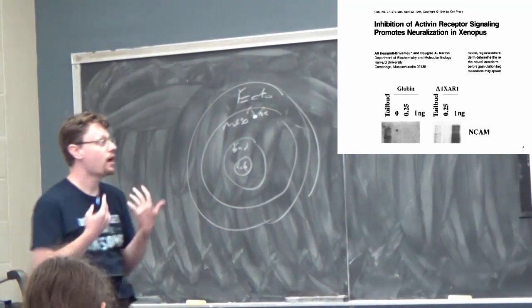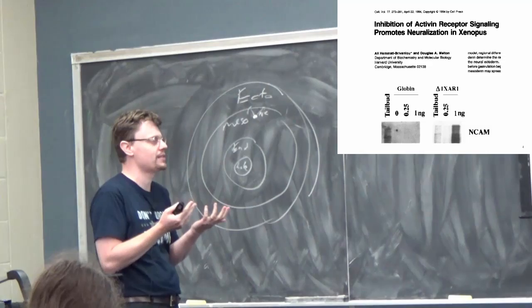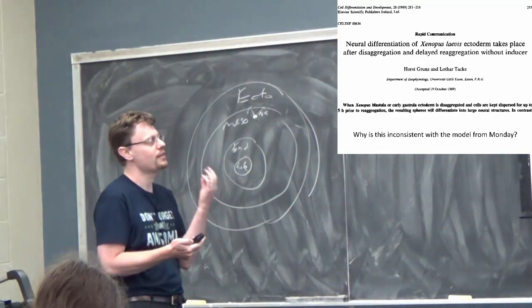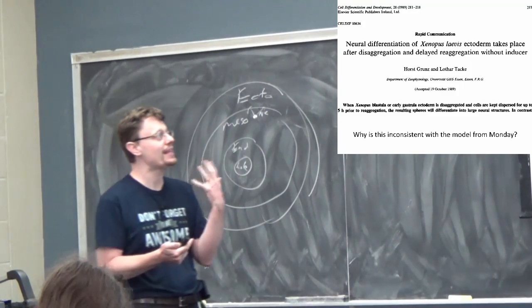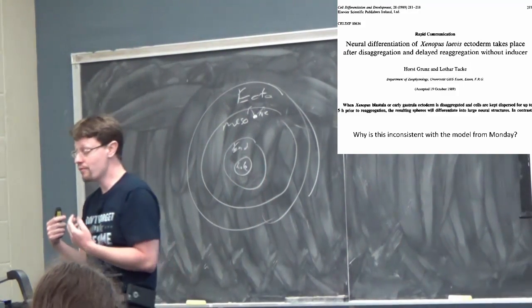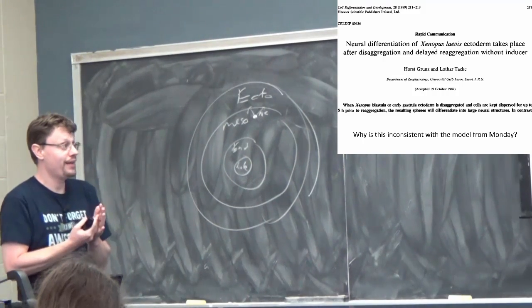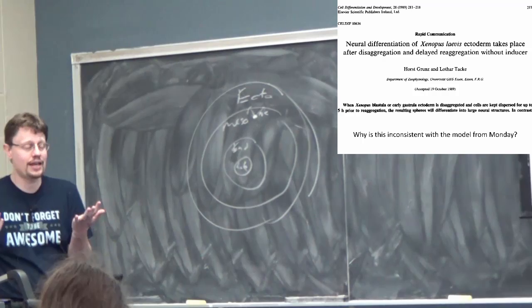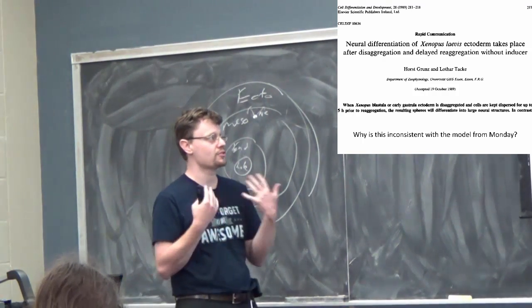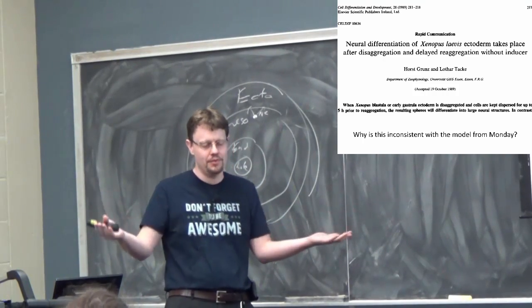And yet, because Horst Gruntz and Lothar Tack and everybody was so convinced that ectoderm defaulted to skin and had learned that for decades and thought about that, and that was just what they knew, they didn't appreciate how revolutionary their results were. And it wasn't until Ali Hematru-Bervanlu found some more results that were even more surprising, and he really couldn't make sense of it, and then he went back and he was like, wait, wasn't there this paper five years ago that said this? And so he went back and he figured out what Horst Gruntz and Lothar Tack had missed, not through really any fault of their own.